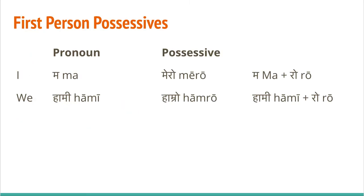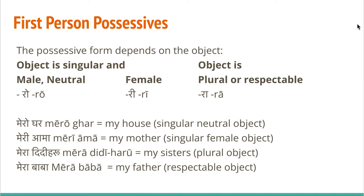So first person pronouns — if you remember from the last video, 'I' is 'ma' and 'we' is 'hami'. When we make possessive forms for these pronouns we add 'ro', but the form is not regular. So 'ma' plus 'ro' becomes 'mero' and 'hami' plus 'ro' becomes 'hamro'.